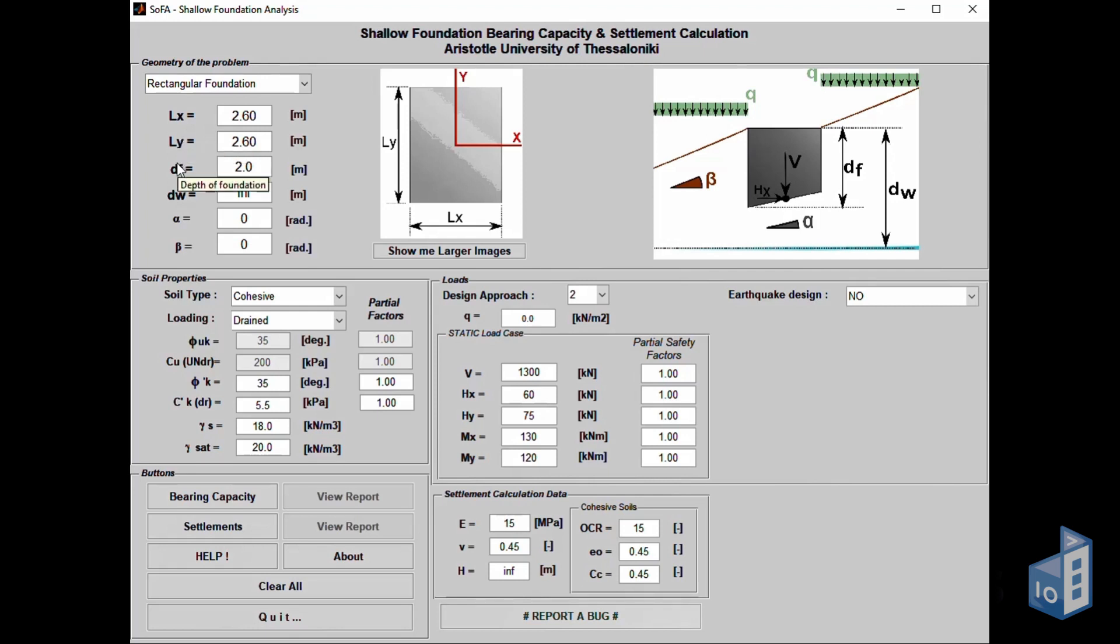Next comes the depth of the foundation and the depth of the water level. Finally for this section, the footing's base inclination as well as the soil inclination can be added.